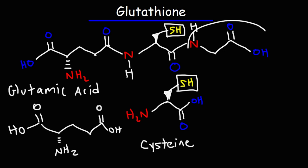Now the third part of glutathione is glycine. We're going to break the peptide bond and add a hydrogen to the NH group. So those are the three amino acids that make up glutathione.